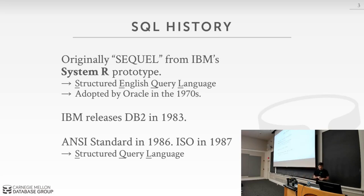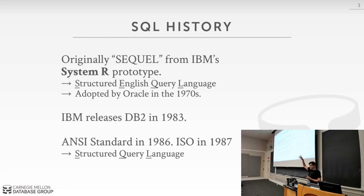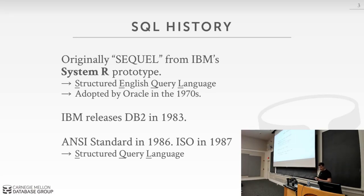DB2 supported SQL, which essentially became the standard. Oracle took off by copying what IBM was doing in the 1970s. When IBM came out with DB2 with SQL, Oracle was right there and said 'we support SQL too.' SQL became an ANSI standard in 1986 and an international standard in 1987. The short version now just means Structured Query Language.